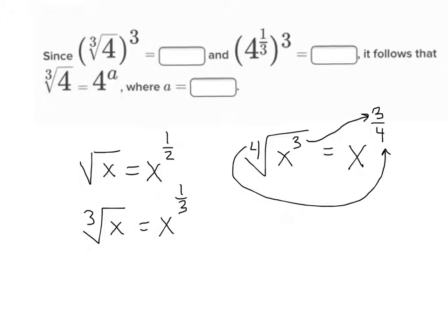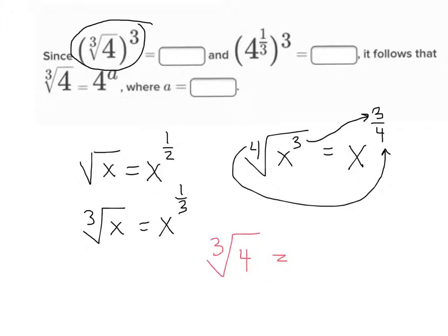So if we look at the problem they provided us right here, we've got the cube root of four, and the whole thing is being cubed. Before I can cube everything here, I need to rewrite it where I have an exponent. So what is the same thing as the cube root of four? It's four to the one-third power.